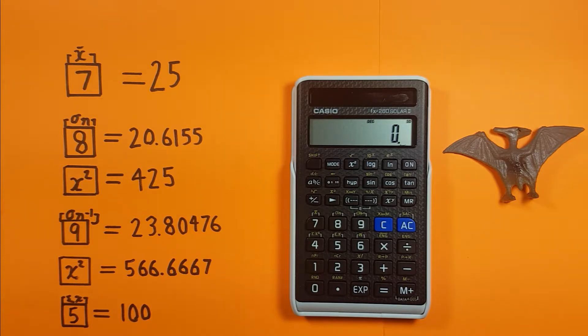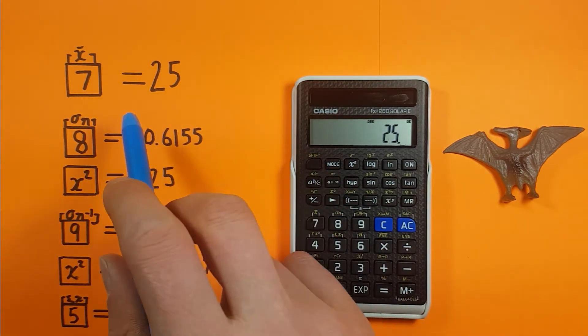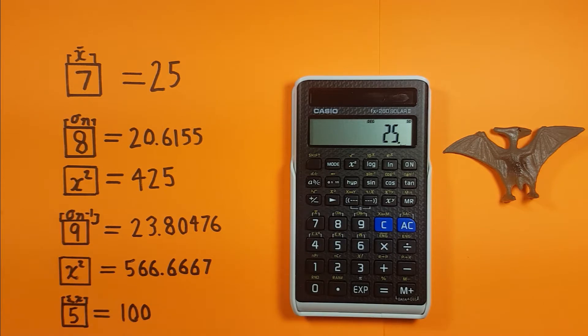All right, let's start looking at some statistics now. First one we'll look at is the mean. To get this we press shift 7 and we see you get a mean of 25.